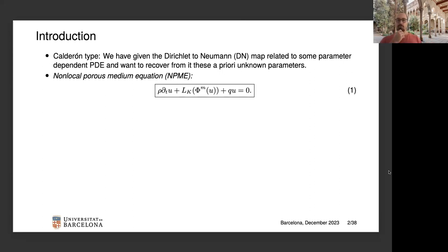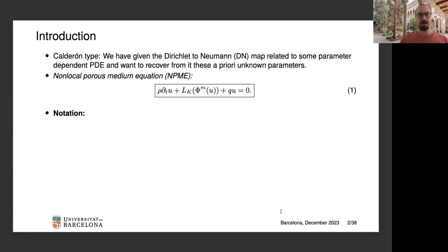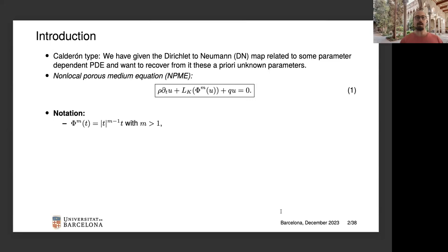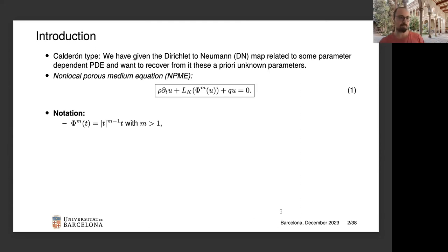The terminology 'porous medium equation' comes from the fact that the nonlinearity φ_m is given as the modulus of t to the power m minus one, times t. Here we are only considering the case where m is strictly bigger than one. This is the usual nonlinearity seen when studying the porous medium equation. If t is positive, it simply reduces to the m-th power of t.